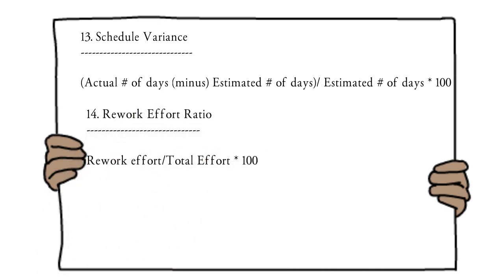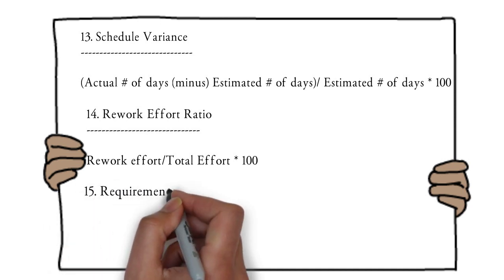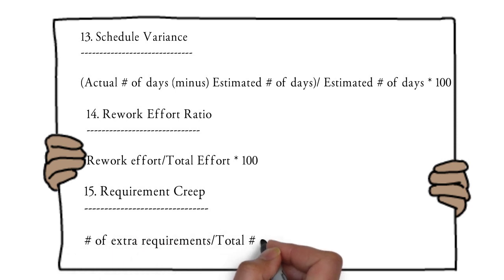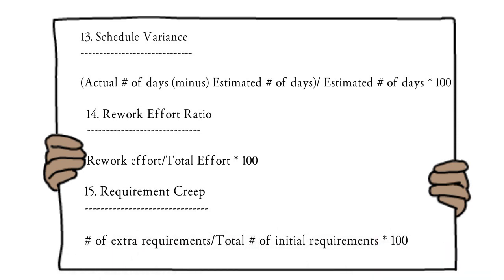Rework effort ratio accounts for rework due to changes in requirements. Rework effort ratio = (rework effort / total effort) × 100. The last metric is requirement creep — requirements may change while testing is in progress. Requirement creep percentage = (number of extra requirements / total number of initial requirements) × 100.